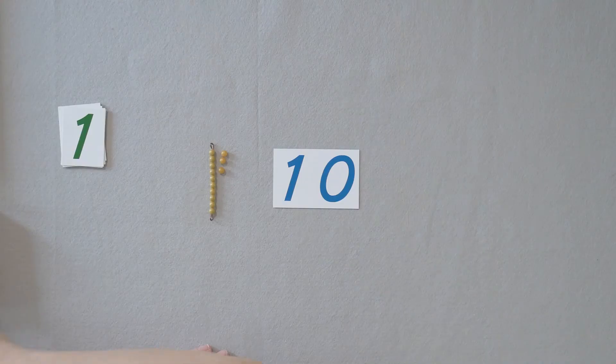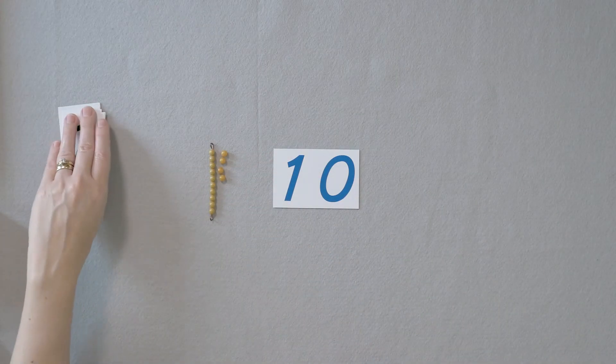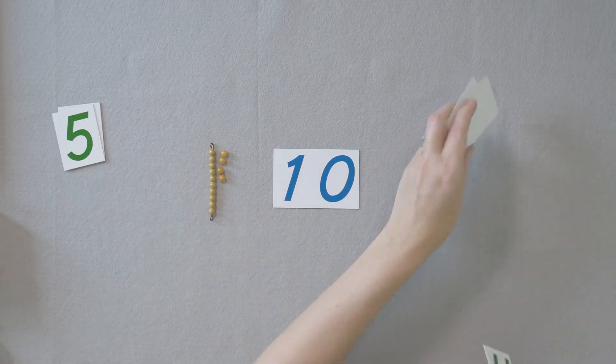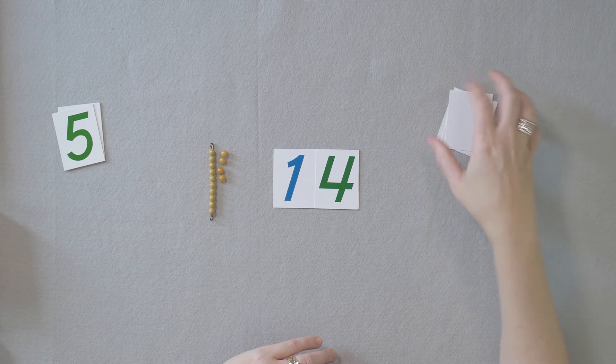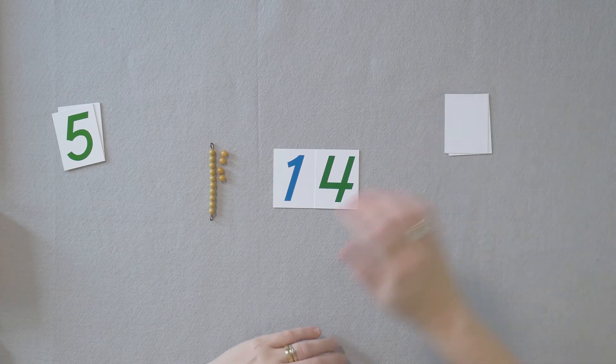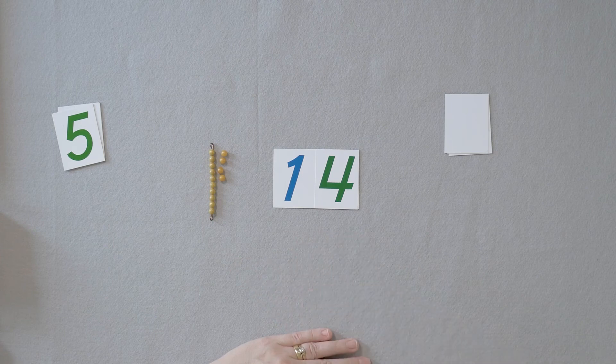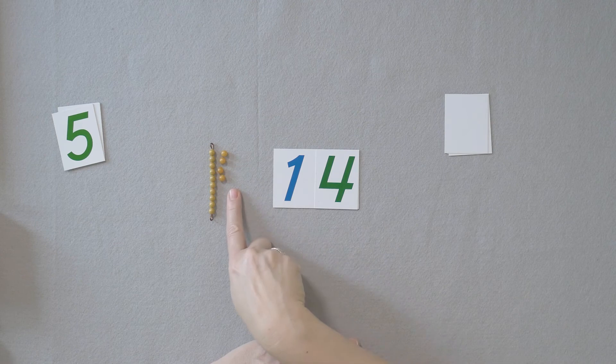But if they're ready to go on to 14, 15, all the way through, you absolutely can do that with them. As you get beyond, as we get to, say, 14 and these quantities beyond 13, especially, you can point out 14. I can hear 4 in that. There's 4, and I see there's 4 beads, and the number 4 is in that number.